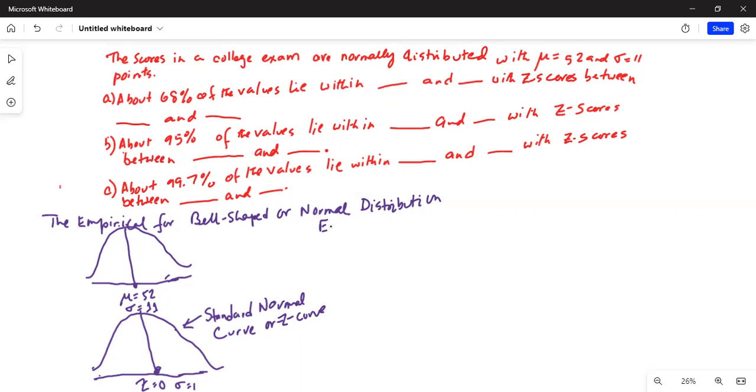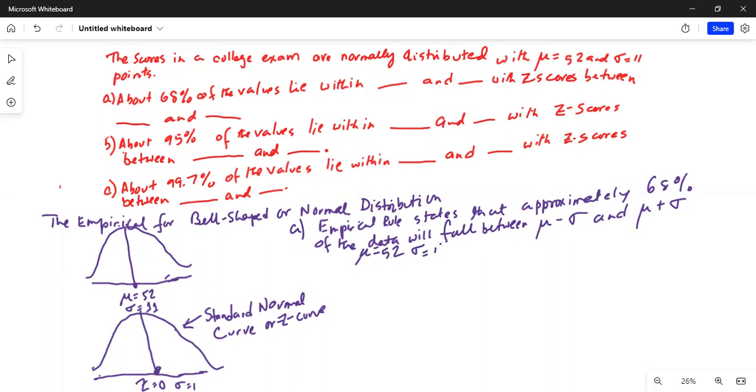At the center where the peak is the highest or relative frequency is the highest, mean is 0, standard deviation is 1 for this curve. Empirical rule states that approximately 68% of the data will fall between mu minus sigma and mu plus sigma. So let's do the number crunching. Our mu is equal to 52, sigma is equal to 11.